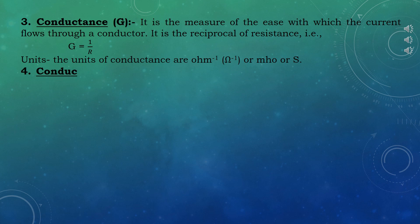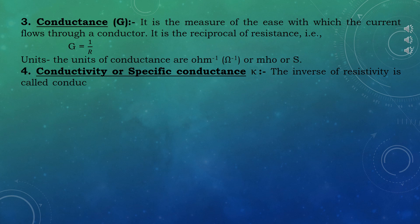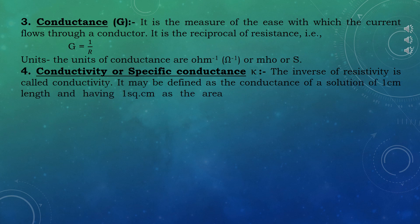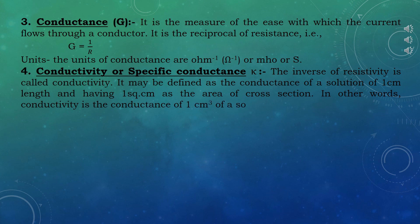The fourth term is conductivity or specific conductance, represented by κ (kappa). The inverse of resistivity is called conductivity. It may be defined as the conductance of a solution of 1 cm length and having 1 cm² area of cross-section — in other words, conductivity is the conductance of 1 cm³ of a solution of an electrolyte. Thus κ equals 1/ρ, which equals (1/R)·(L/A). If we substitute 1/R as conductance G, then κ equals GL/A.